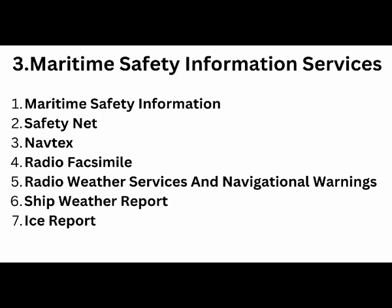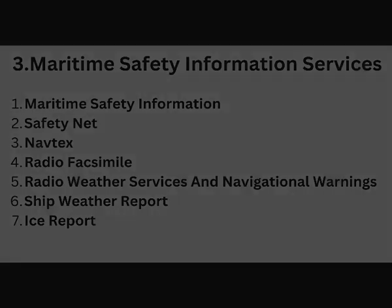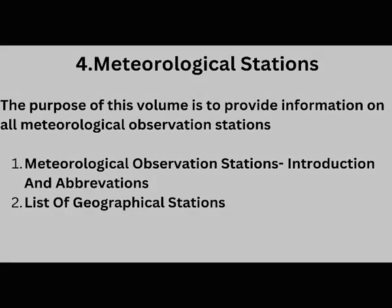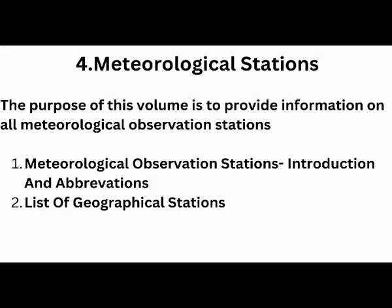Volume 3 talks about maritime safety information services. Basically, maritime safety information includes FleetNET and SafetyNET, which also come on board ship through various forms, starting from NavTex stations, radio facsimile receivers, and SAT-C weather reports.